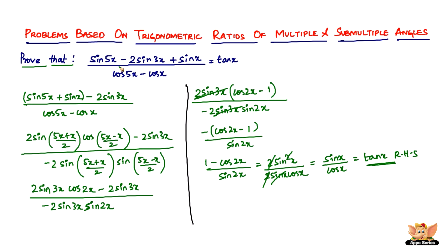So hence, we proved sine 5x minus 2 sine 3x plus sine x divided by cos 5x minus cos x equals tan x. So that ends this problem.